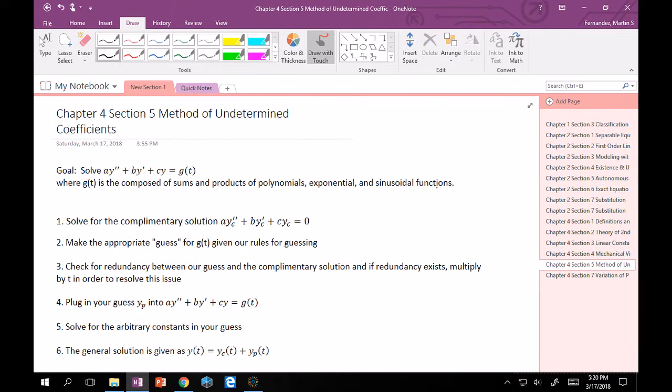So finally, now you're going to plug in your for sure final guess into ay'' + by' + cy = g(t). After that, you're going to have all these arbitrary constants that you're going to have to solve for in order to find your particular solution, which is yp, and then the general solution is just given as the sum of the two, again, explaining the linearity of everything that we're doing so far.